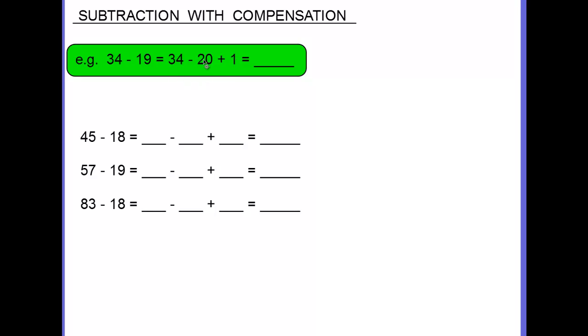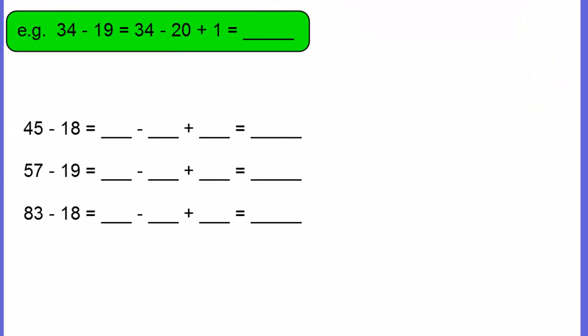So we've got 34 take away 20, which is 14. Add the 1, which gives us an answer of 15, and write in the answer 15. So let's go straight down to some questions.